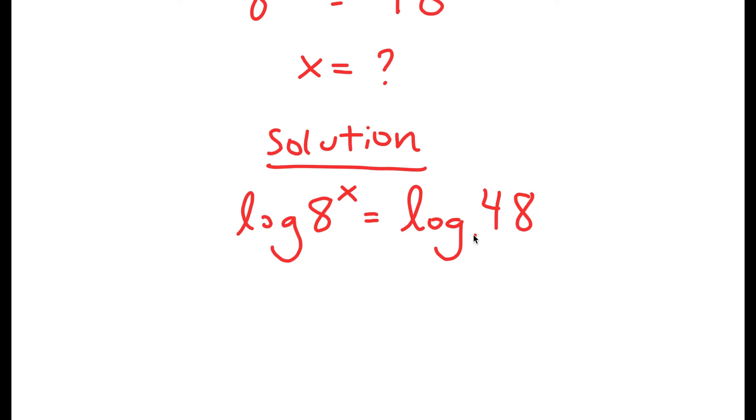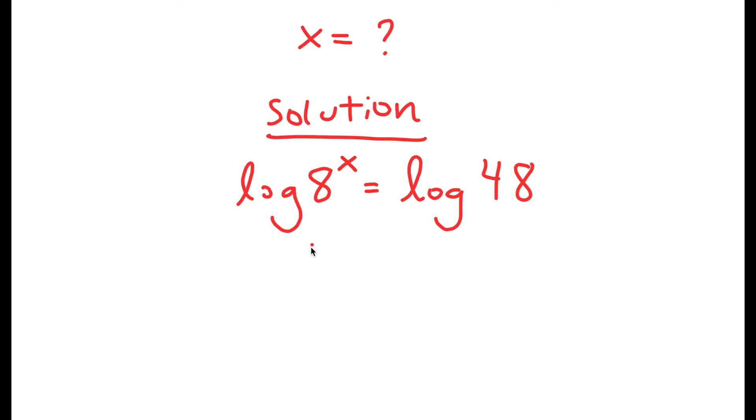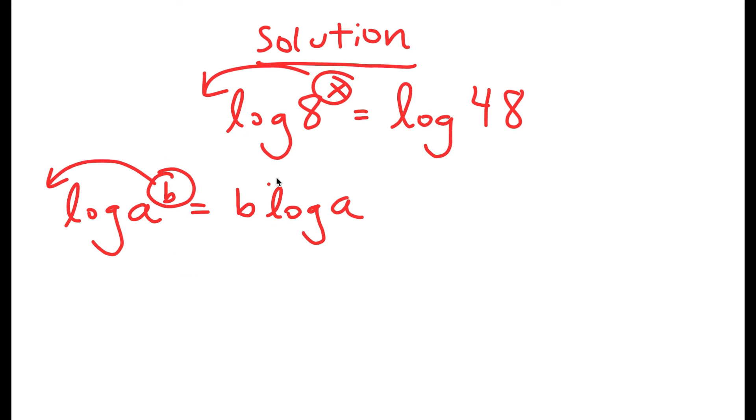So now many of you may be wondering why I chose to take the log on both sides. Well, that's because logarithms come with a useful property that states that if I have something in the form log a to the power of b, I can move this exponent b to the front, so this turns into b times log a. So in other words, right now x is an exponent and it's really hard to solve for x. But using this property, I can move x to the front, so now it's going to turn into a real term and it's going to be much easier to solve for it.